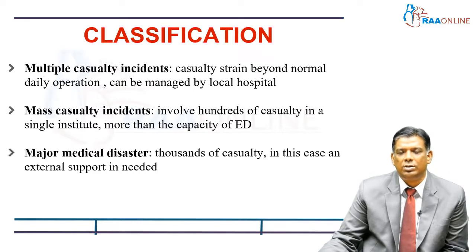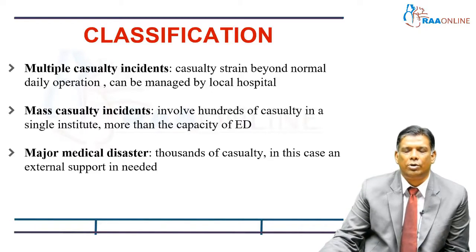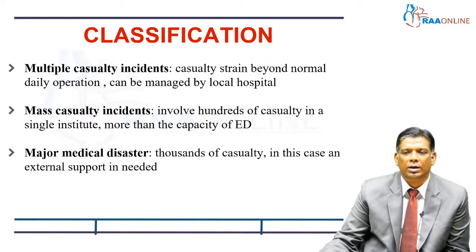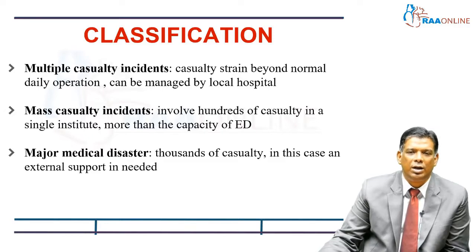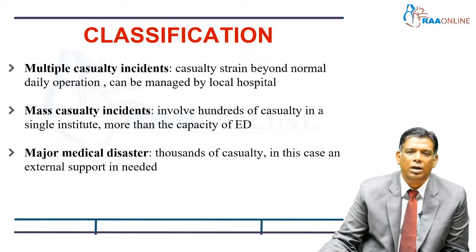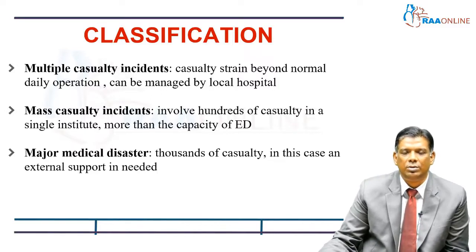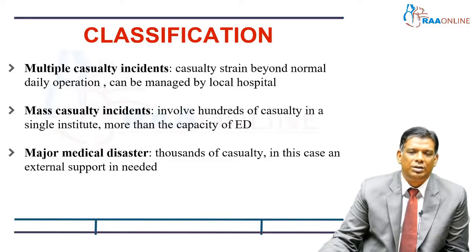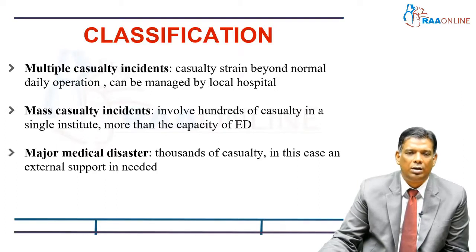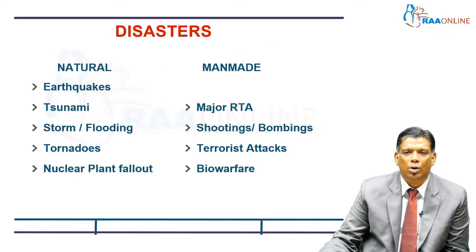Multiple casualty incidents is when the casualty strain is beyond the normal daily operation — if your casualty is handling around 40 to 50 patients a day and suddenly it steps up to around 150 to 200, that is a multiple casualty incident, but it can still be handled by the local hospital. When it is a mass casualty, it involves hundreds of casualties to a single institute, definitely more than the capacity of that emergency department. A major medical disaster is when it's more than numbers into the thousands and definitely external support is required.